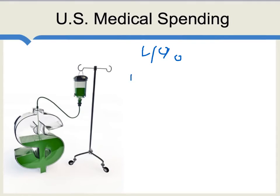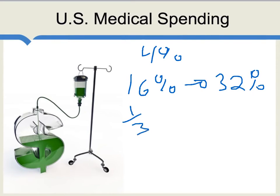Now, today medical spending as a share of GDP is about 16%. If it continues to grow 2% faster than U.S. GDP per capita, then in 35 years it'll be 32% — approximately a third of the economy's spending will be on health care. Now, it's clear that even if the economy as a whole could handle a rate of medical spending of a third, there are many people in the U.S. economy who could not handle that rate — many people below median income. That would be a real problem. So something is going to break.